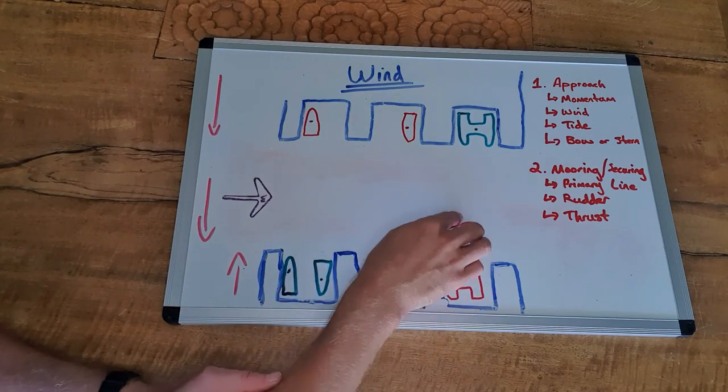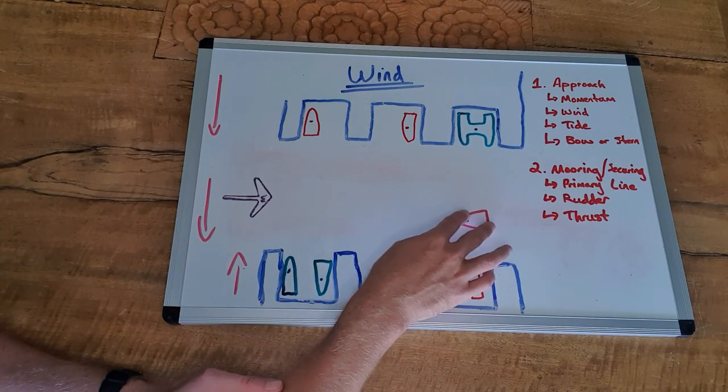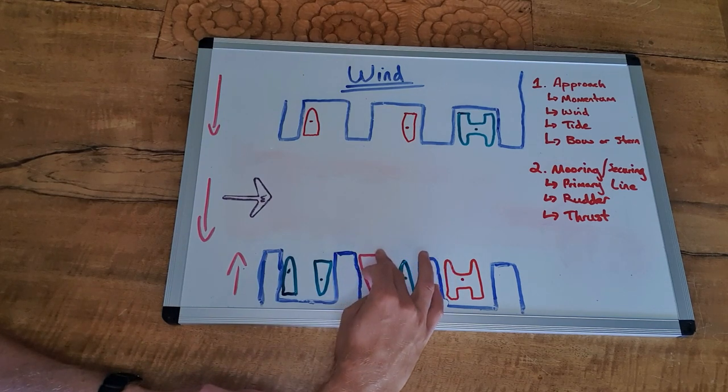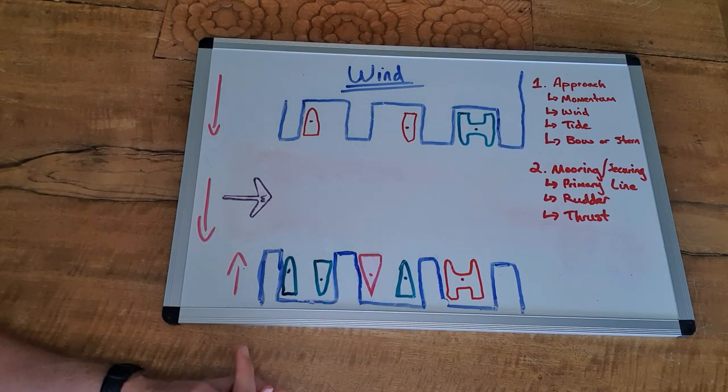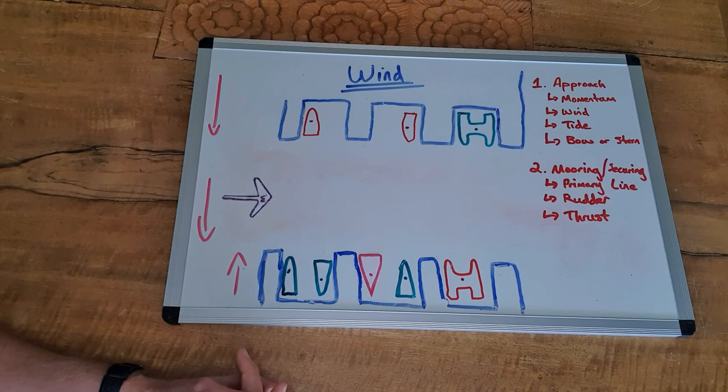We're going to go into that once we go into mooring and securing and the primary line and how we can hold ourselves in. But again, the approach here is pretty straightforward in this scenario. Against the breeze, turn up and in, you get the boat up on the dock so people can step off and moor the vessel to the berth, to the dock.